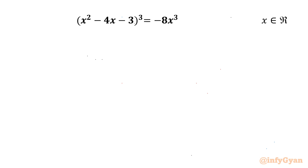Welcome back to Infigyan, my dear friends. In this video we have one very interesting question from algebra. We have to solve (x² - 4x - 3)³ = -8x³ for the real values of x. So let's get started.